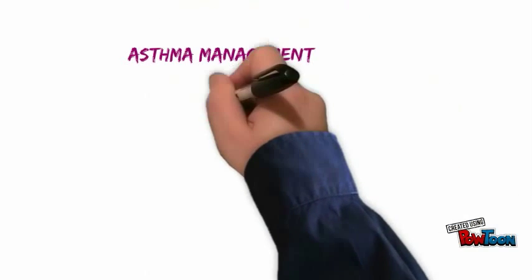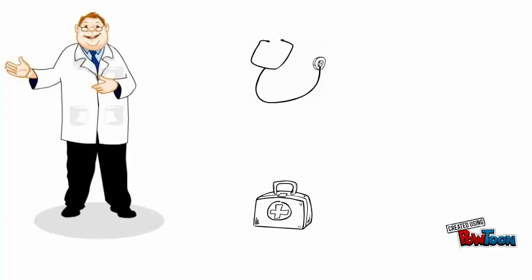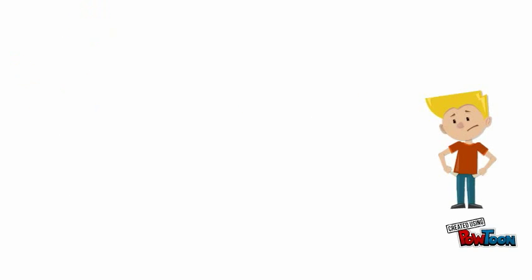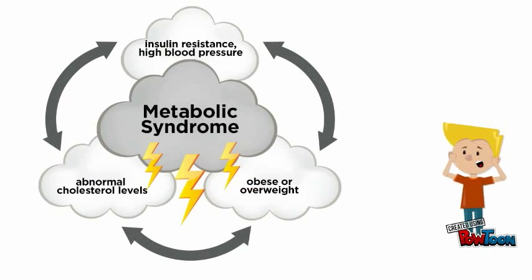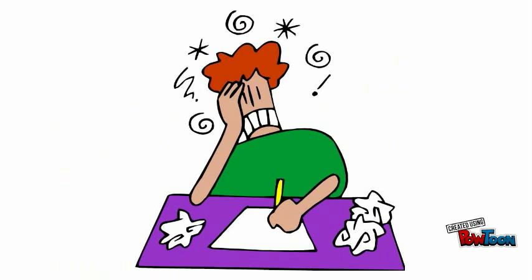One of the primary purposes of asthma management is to attain disease control. Even with advanced therapeutic approaches that include safe and effective medications, asthma in many patients still remains uncontrolled. Uncontrolled asthma results in adverse effects including reduced cardiovascular fitness, obesity and resulting metabolic syndrome, lung infections including pneumonia, and learning impairment in children.